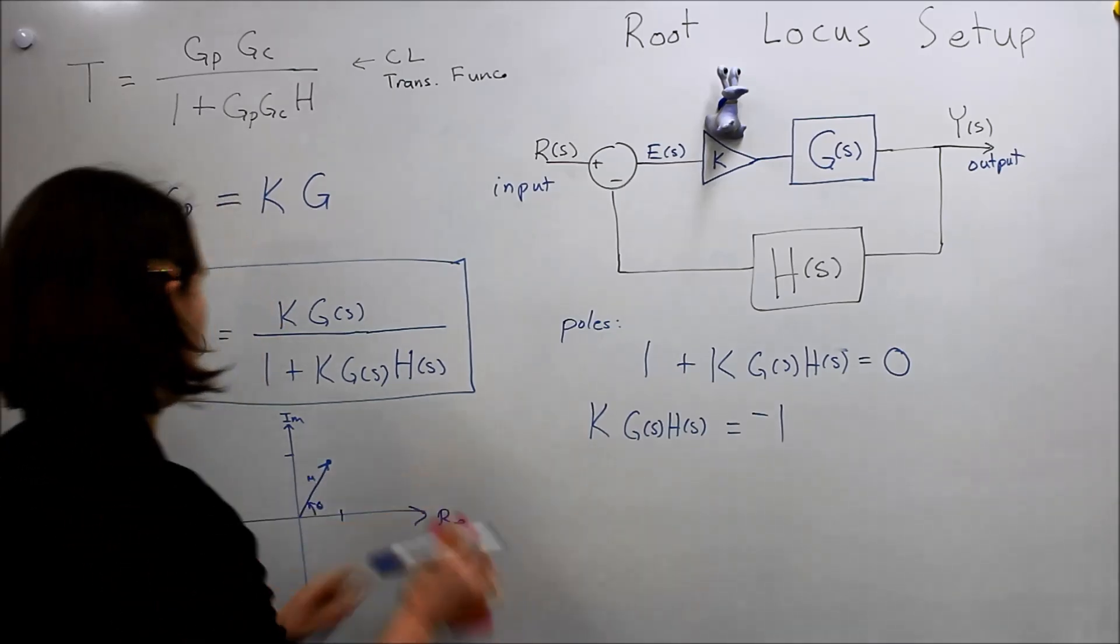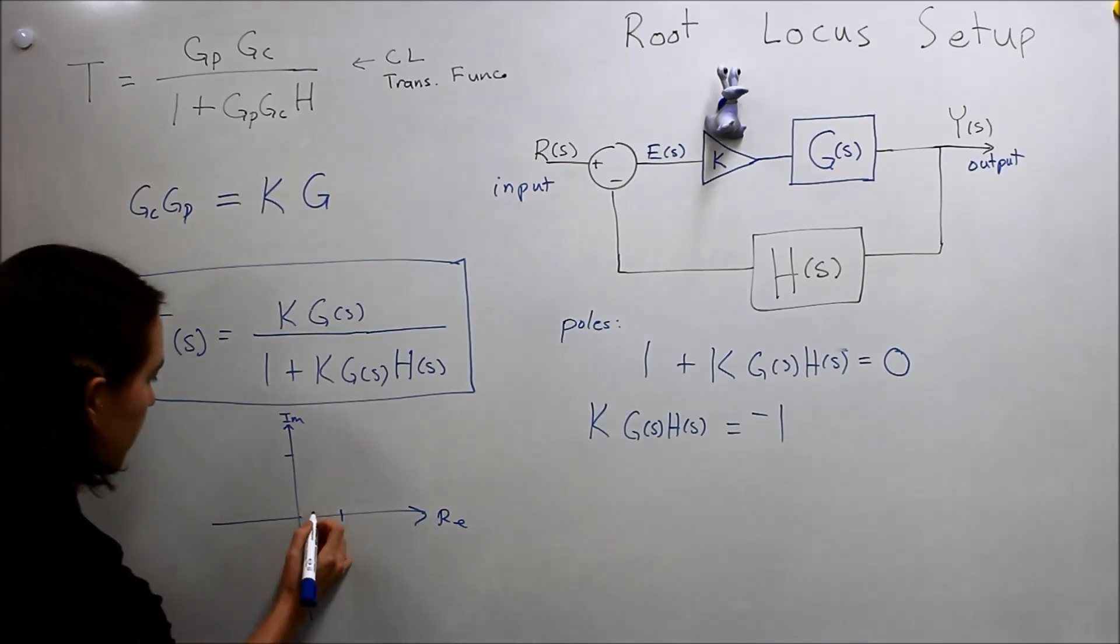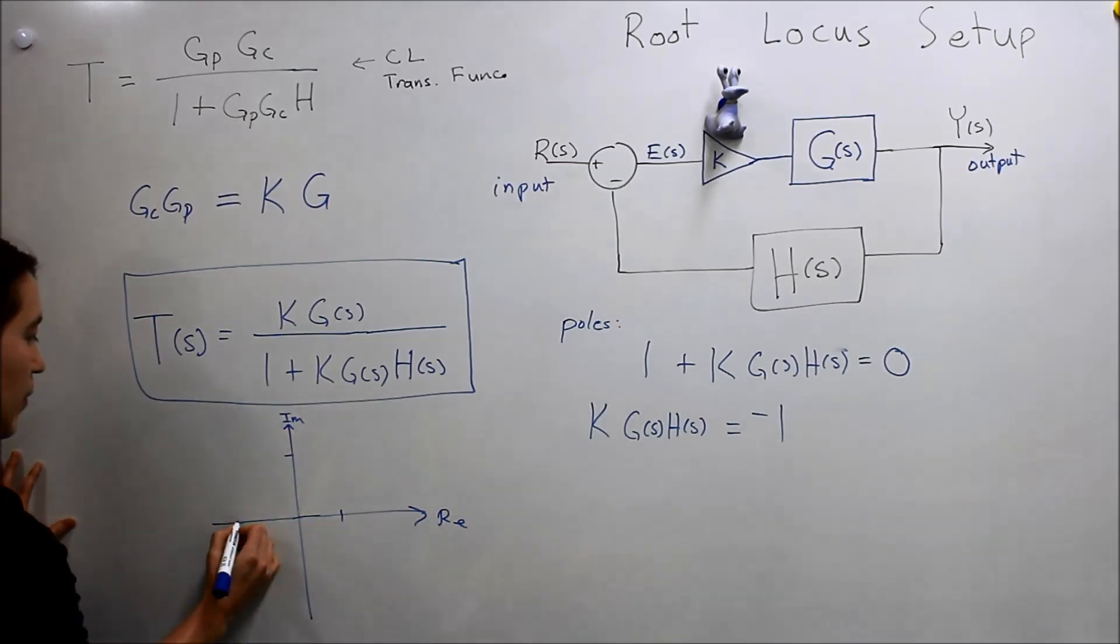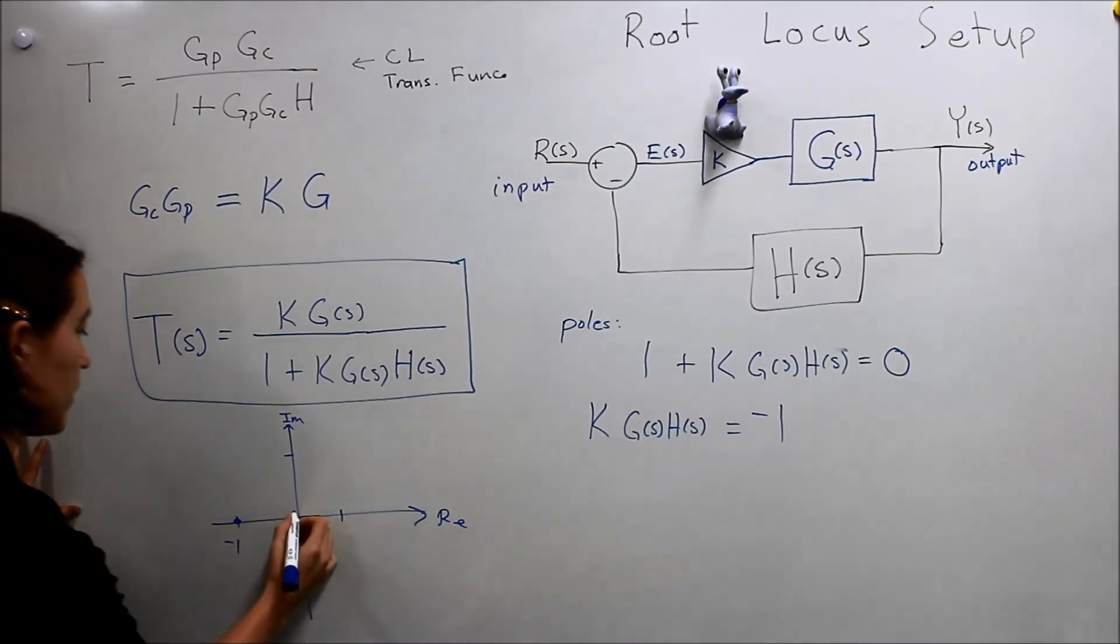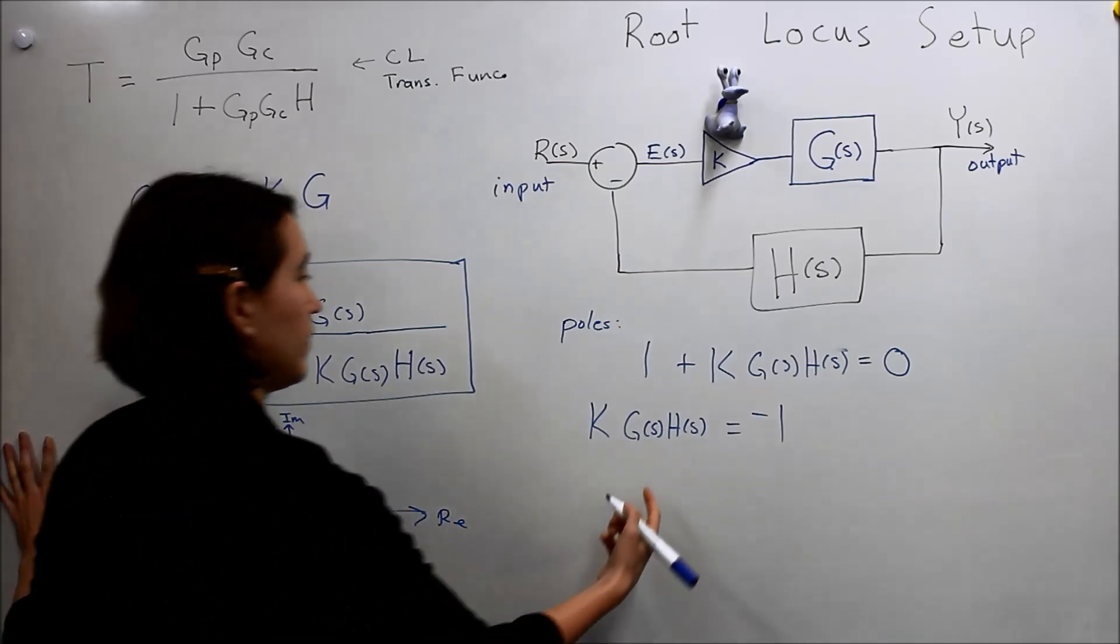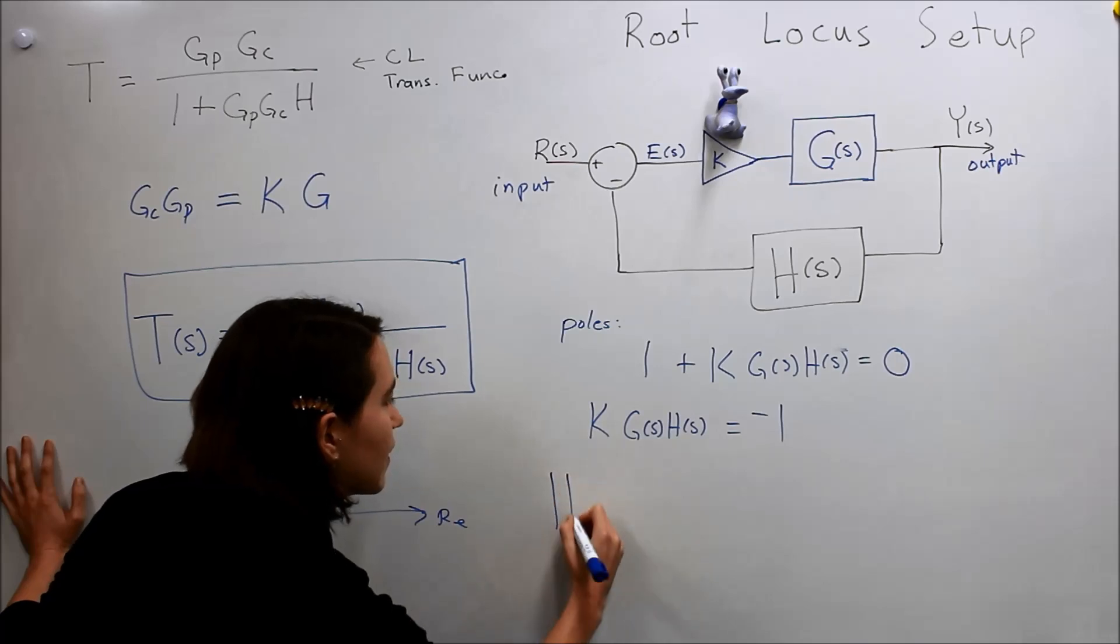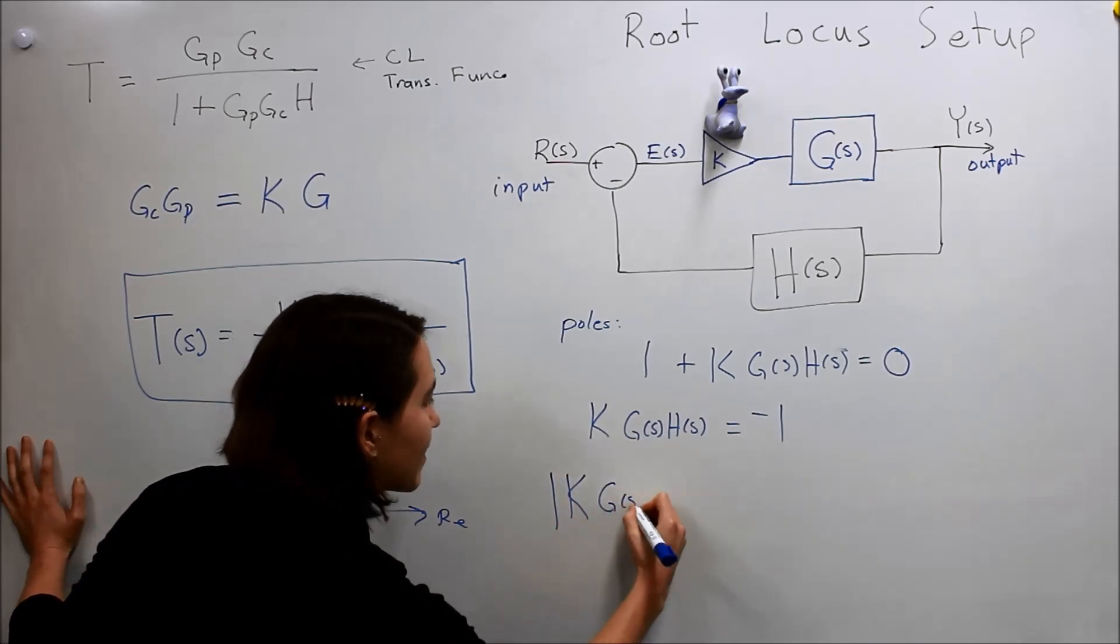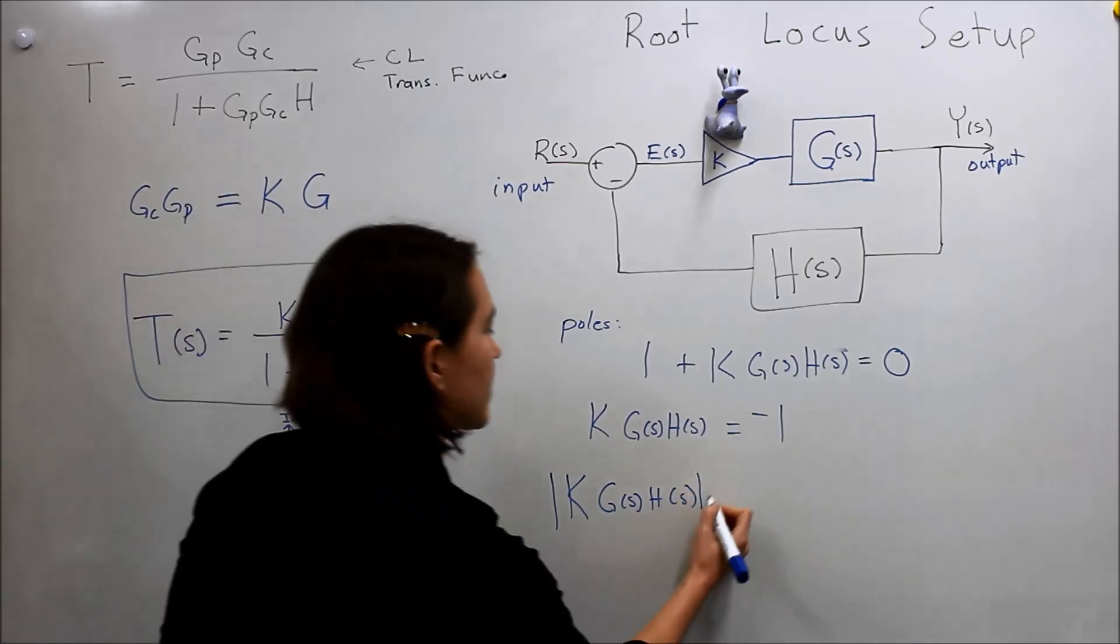So, if you think about what negative one is on the S plane. So, negative one is a point over here. Right? So, negative one, it's on the real axis. So, its magnitude is just simply going to be one. So, magnitude is just one. So, we've kind of break this down. So, the magnitude of this thing, K G of S, H of S, has to be equal to one.